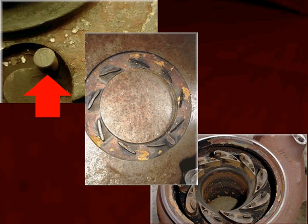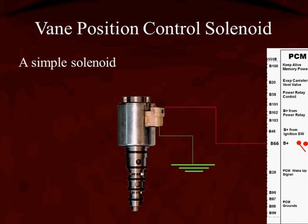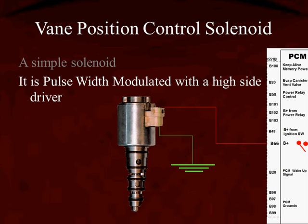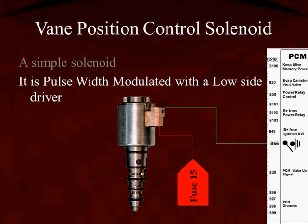Up in the left-hand corner we see what makes that happen — a pin that drives a ring called the unison ring. The arrow points to an elongated hole; as the rod moves back and forth, the unison ring changes the position of the vanes on the right. This can be controlled by a simple solenoid controlling a spool valve, which controls engine oil. It's not simply turned on and off — it's pulse-width modulated using a high-side or low-side driver, allowing the computer to position those vanes exactly where needed.